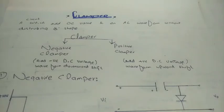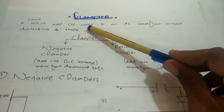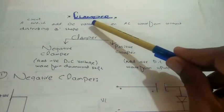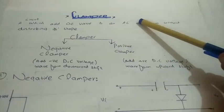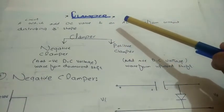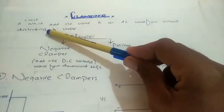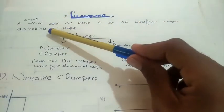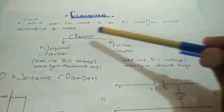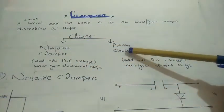A clamper circuit is a circuit where a DC value is added. The shape of the waveform is not changed or disturbed - it remains as it is. There are two types of clamper circuits: negative clamper and positive clamper.